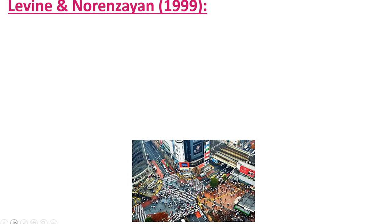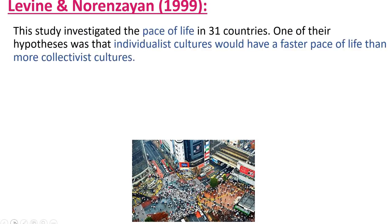I'll post the study description on the assignments tab so you can read it separately. It's a very interesting study — very nice to see a field study. We often get these in sociocultural but not often in other approaches. I'll talk you through it and then you'll need to read it on your own — it's not very long. So this is a really interesting topic: looking at the pace of life in 31 countries. A hugely ambitious study that would have taken months, if not a whole year, to conduct and analyze. Now they had four hypotheses, and one of them was that individualist cultures would have a faster pace of life than more collectivist cultures.